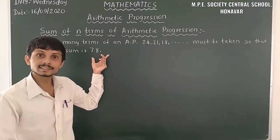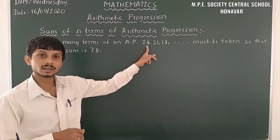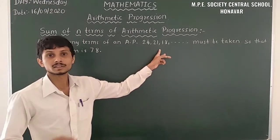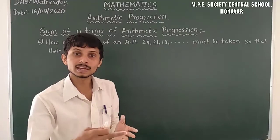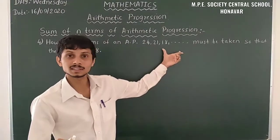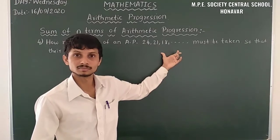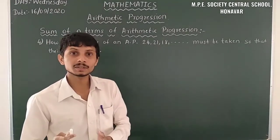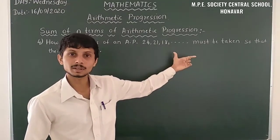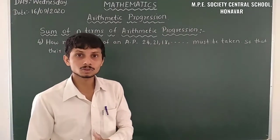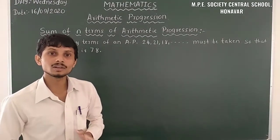We know the value of Sn = 78. The value of A is given, and we can find the common difference. But the value of N is unknown — we have to take some number of terms from this series whose sum is 78. We need to find the value of N.